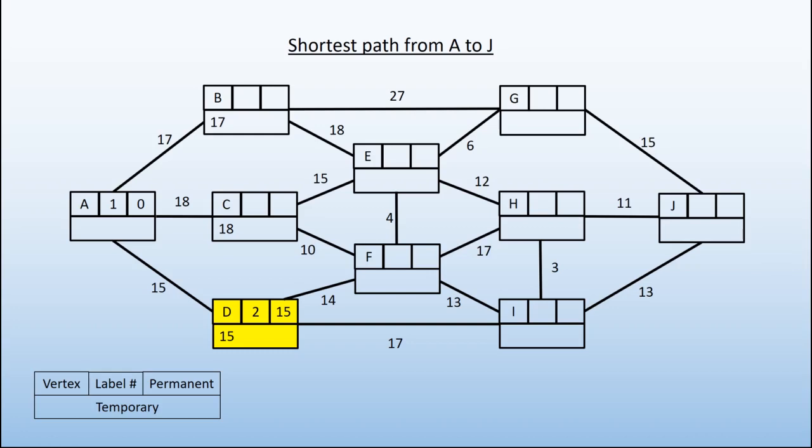B and C, it might be possible, dependent on the other distances that we have, but we know that D can only be done in 15. D is connected to F. We can get there in a distance of 29. That's the 15 to D plus the 14 for the edge between them.